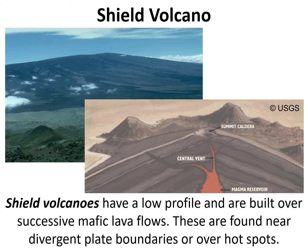Shield volcanoes are absolutely immense — some of the largest on Earth are the volcanoes that make up the Hawaiian Islands, where the main island of Hawaii could house hundreds of Mount Everests. Shield volcanoes have a low profile, developing into a wide, gently sloping hill rather than the ominous-looking volcano we typically picture. Their central magma chamber contains superheated, ultra-mafic magma that rises to the surface through a central vent, and after eruption, the mostly mafic magma gradually builds up the gently sloping sides.